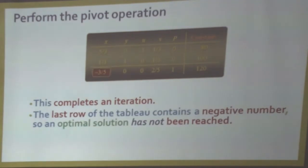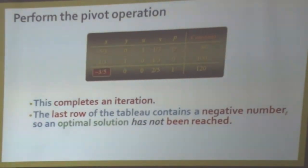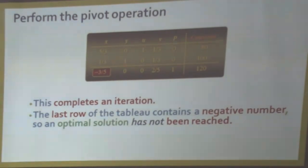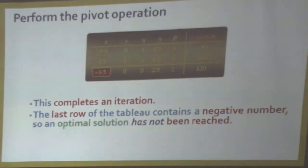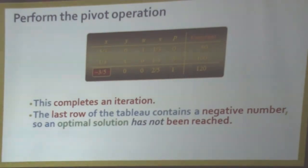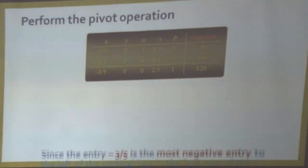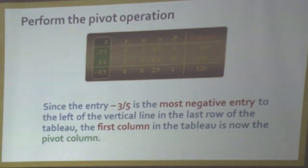Check again whether all entries in the last row are positive or not. The last row of the table still contains a negative number, so an optimal solution has not been reached. We perform the pivot operation again.